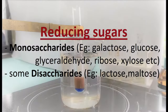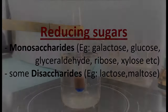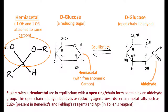Reducing sugars include almost all monosaccharides such as galactose, glucose, glyceraldehyde, ribose, xylose, etc., and some disaccharides like lactose and maltose. Reducing sugars have hemiacetal groups containing free anomeric carbons in their structure. These free anomeric carbons can reduce cupric salts to cuprous salts. This is the basic principle behind the Fehling's test for reducing sugars.